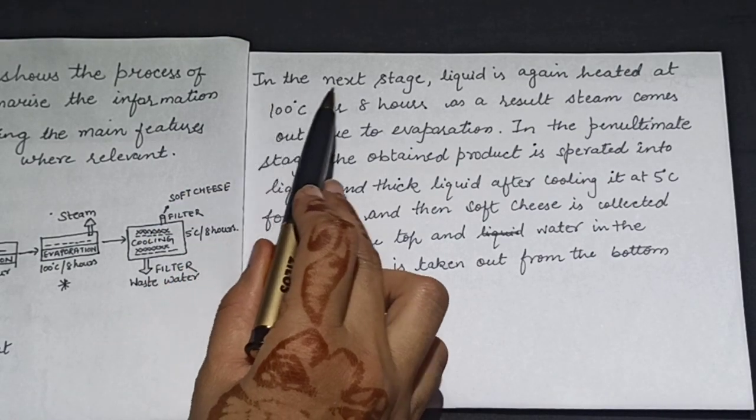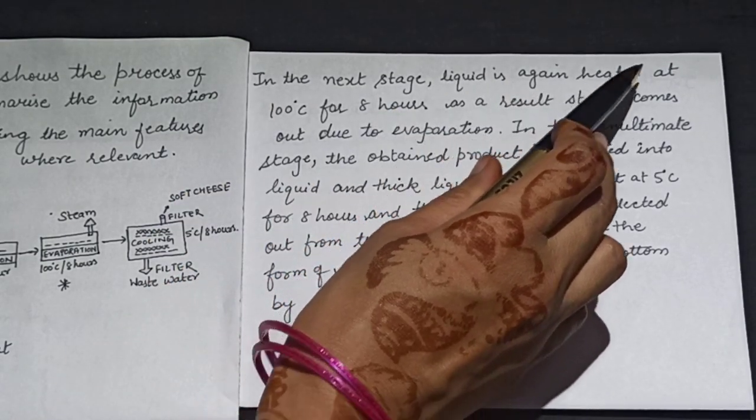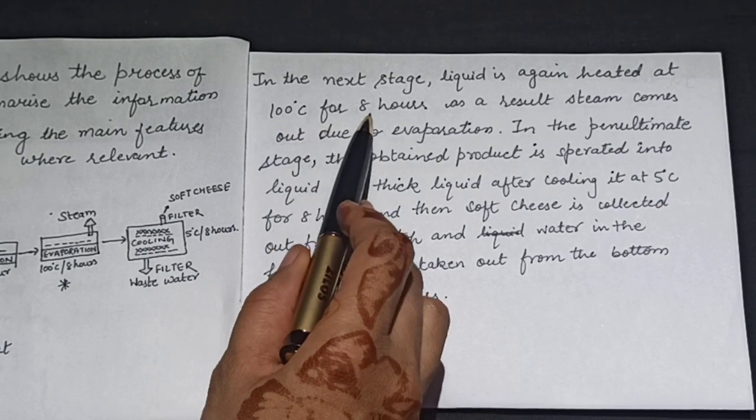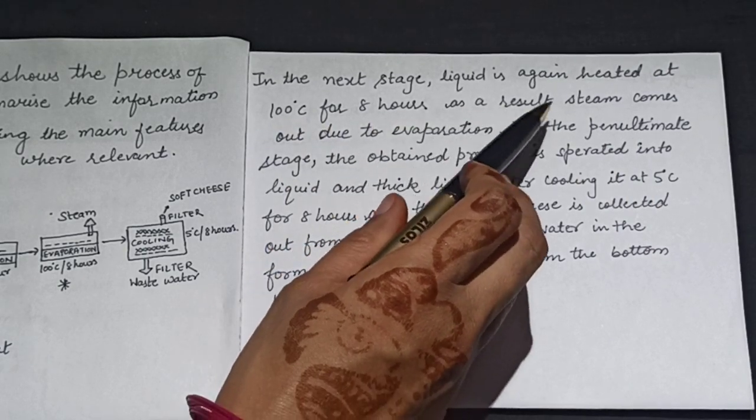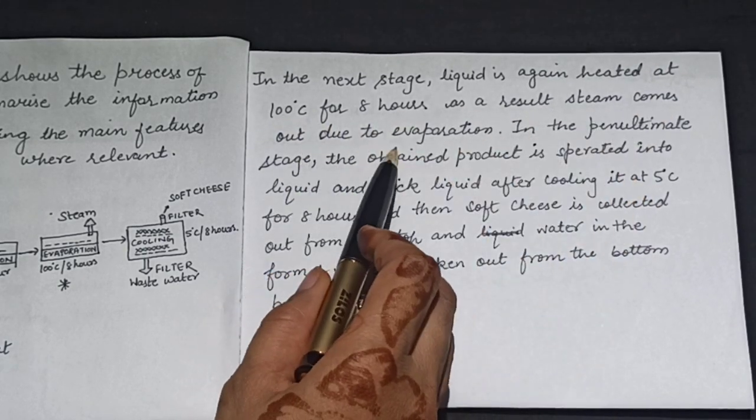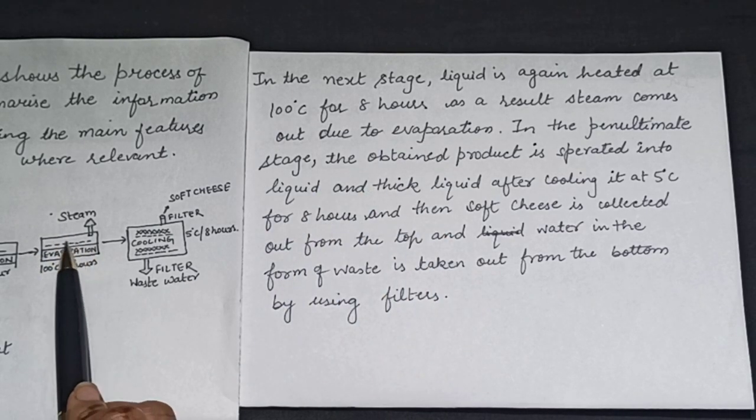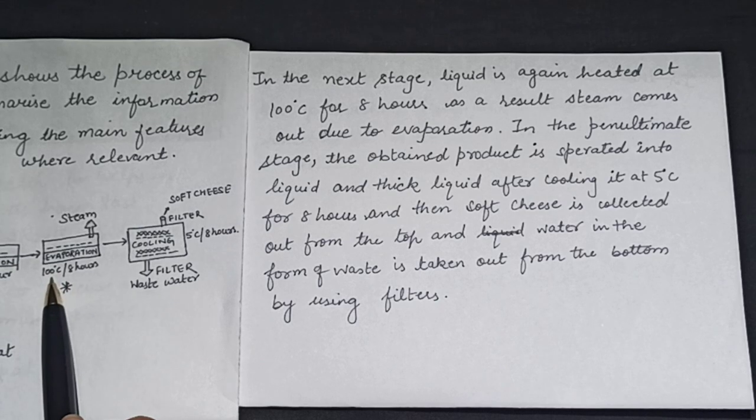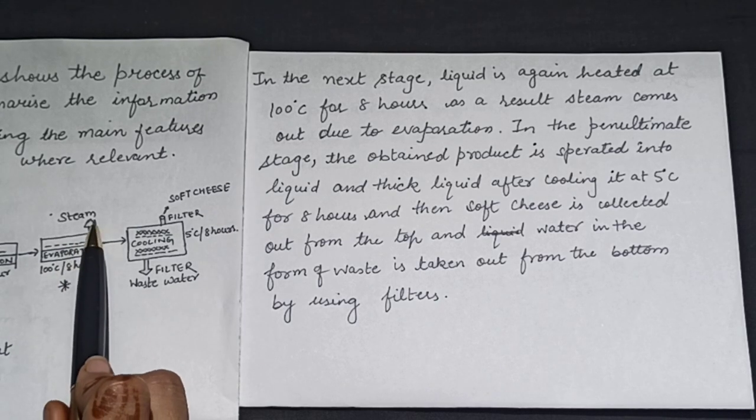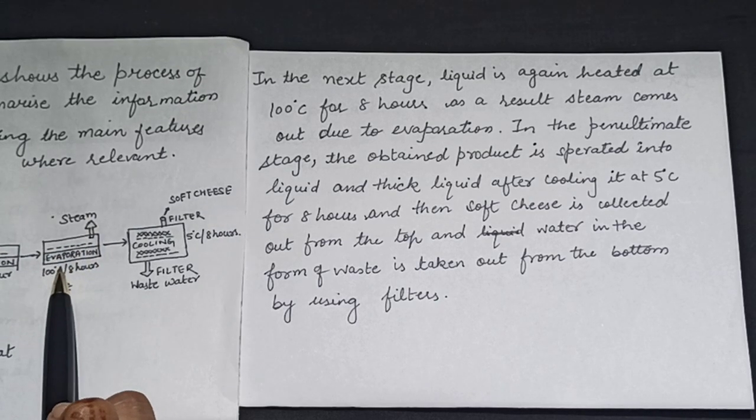Now in the next stage the liquid is again heated at 100 degrees Celsius for 8 hours as a result steam comes out due to evaporation. The liquid is again heated for 8 hours and steam comes out due to evaporation.